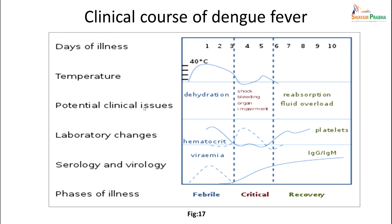The clinical course of dengue fever: the patient has high fever in the first few days, which goes down and may come up again. There can be dehydration, potential complications, or inflammation during this phase. Shock, bleeding, and fluid overload can occur and need to be monitored. Hematocrit starts high and can come down; platelet levels decrease and can rise again. Viremia is seen in the first week; IgM antibody starts forming first and progresses to IgG.